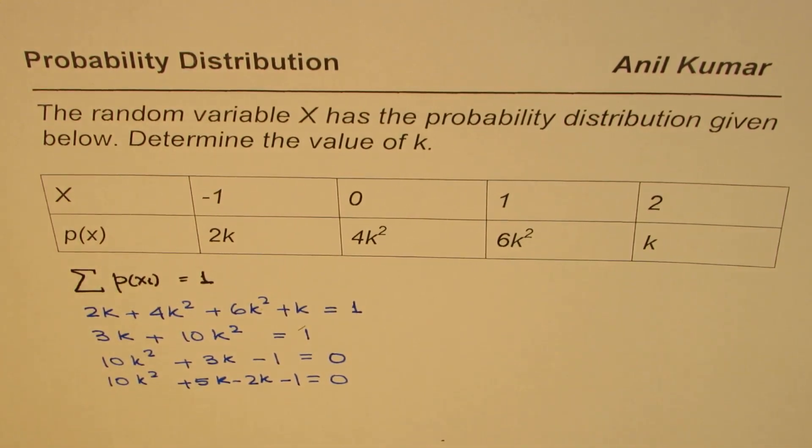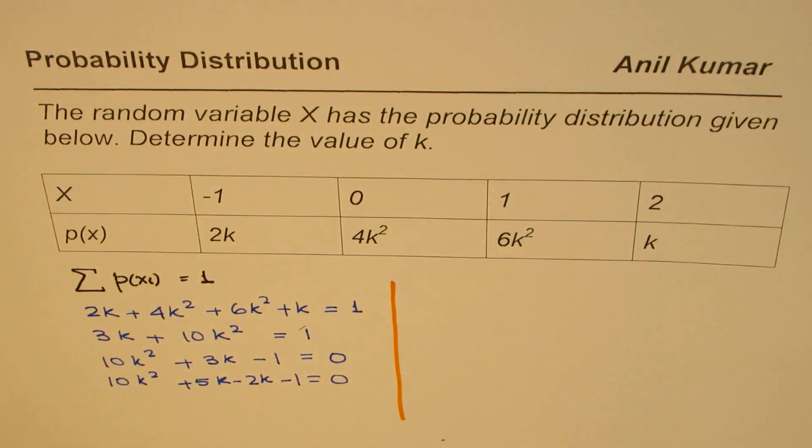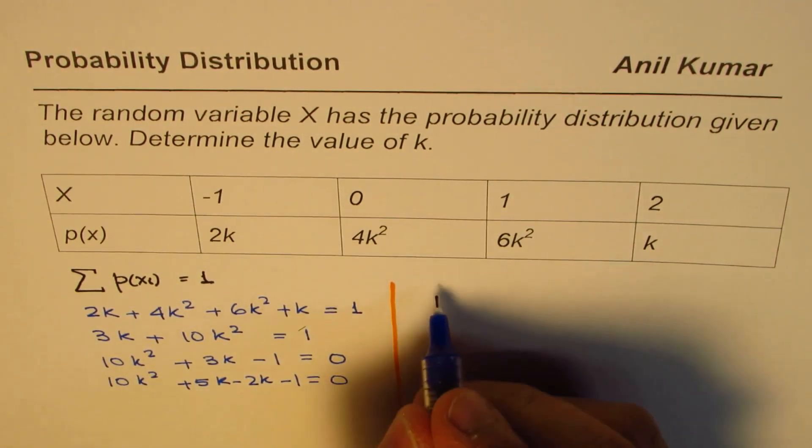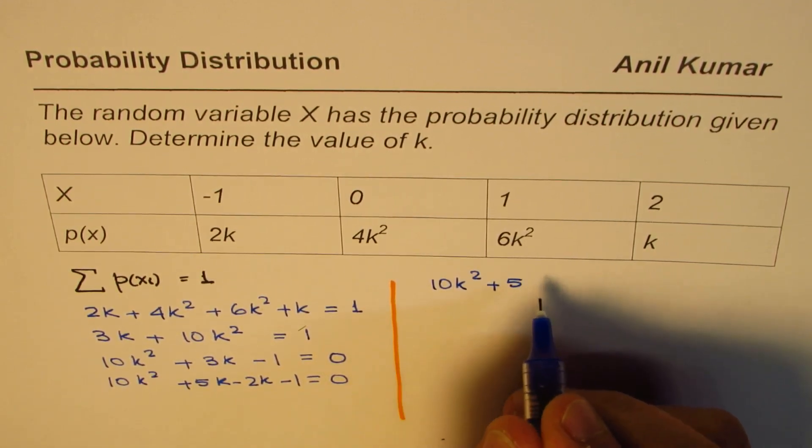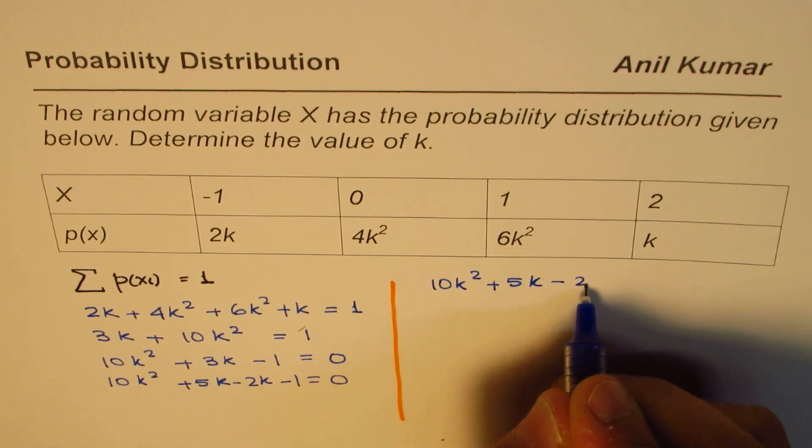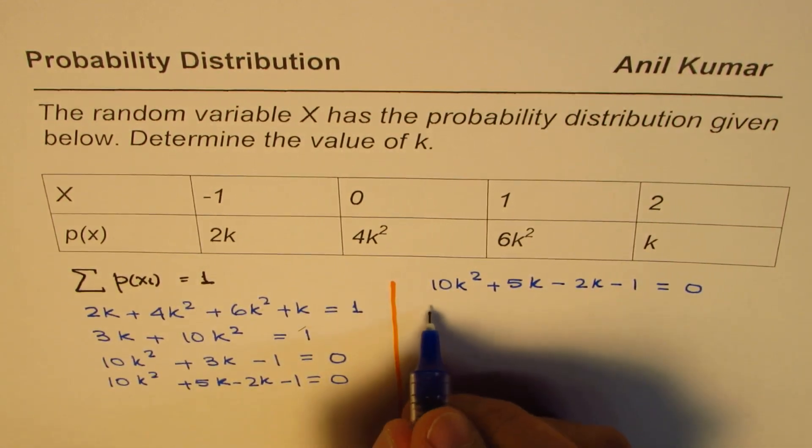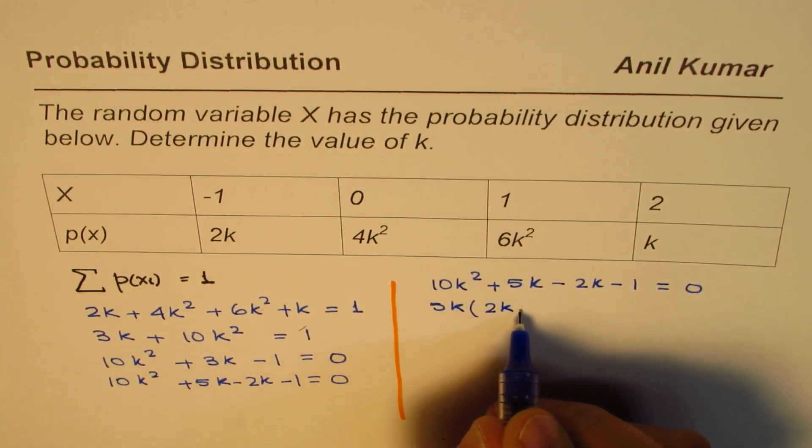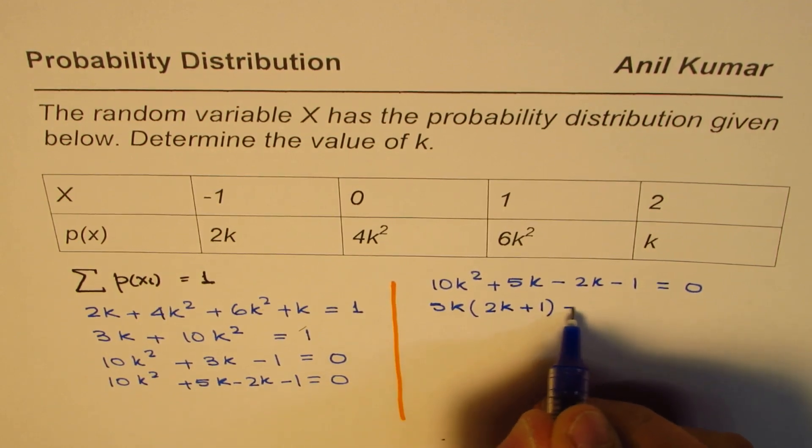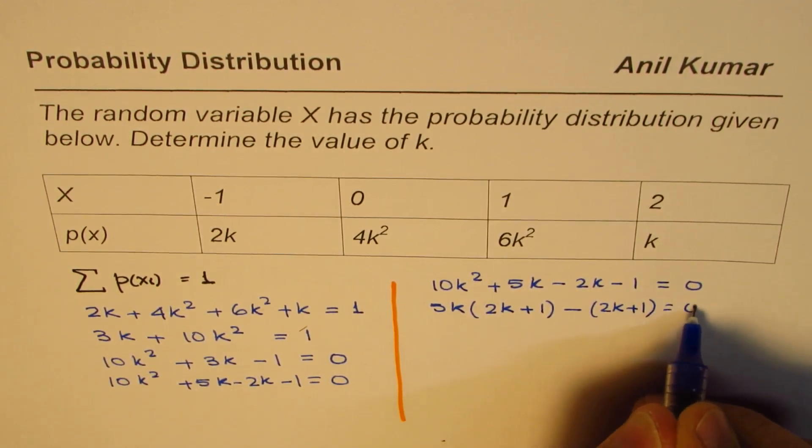Let me take it to the right side and complete the factoring and write down the question's answer. We have 10k square plus 5k minus 2k minus 1 equals to 0, we can take 5k common. So 5k, we are left with 2k plus 1, we can take minus common, so we get 2k plus 1 equals to 0.